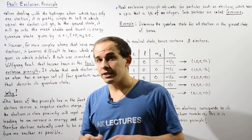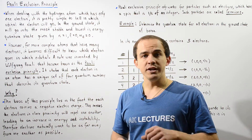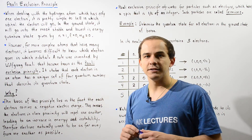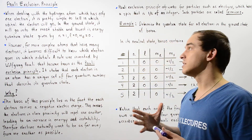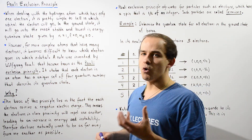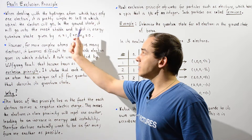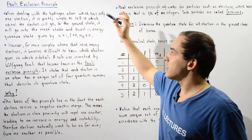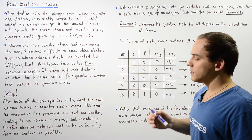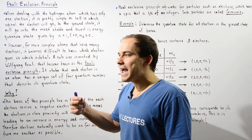Because we're only dealing with one electron, there's really no need to specify the fourth quantum number, the spin quantum number. But let's suppose that the spin quantum number is positive one-half. These are the quantum numbers that specify the electron in the ground state of the hydrogen atom.